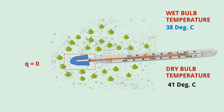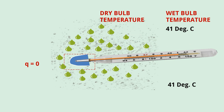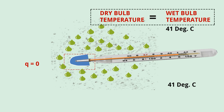As there is no heat loss, the temperature will be the same as dry bulb temperature — 41 degrees centigrade. So at 100 percent moisture or 100 percent relative humidity, dry bulb temperature equals wet bulb temperature.